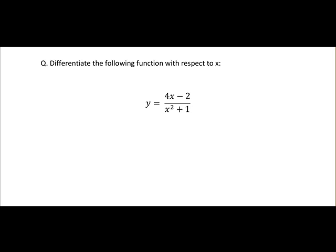So we'll take a look at an example of the quotient rule. We're asked to differentiate this particular function, which is a quotient of two functions. So our first step is to identify u and v. It's always u over v. So u is equal to 4x minus 2, while v is x² plus 1.